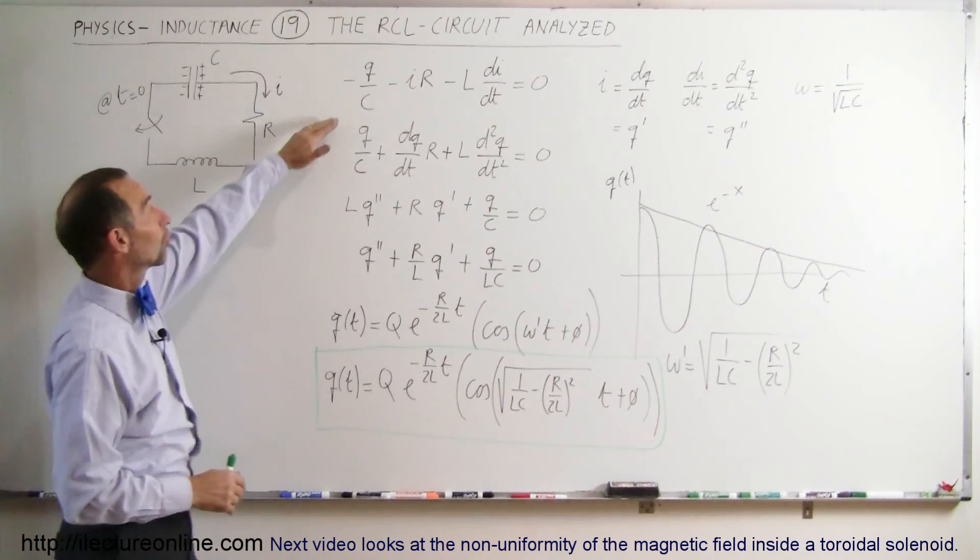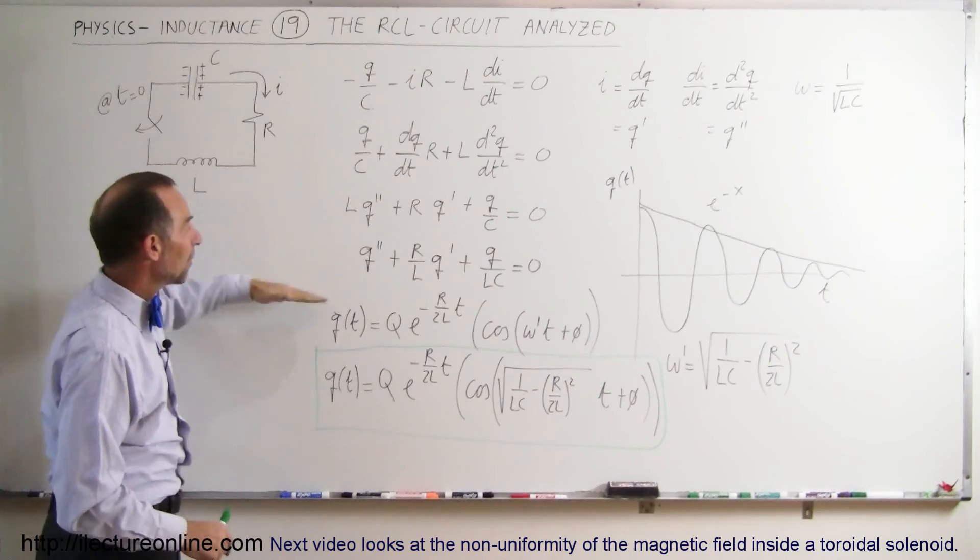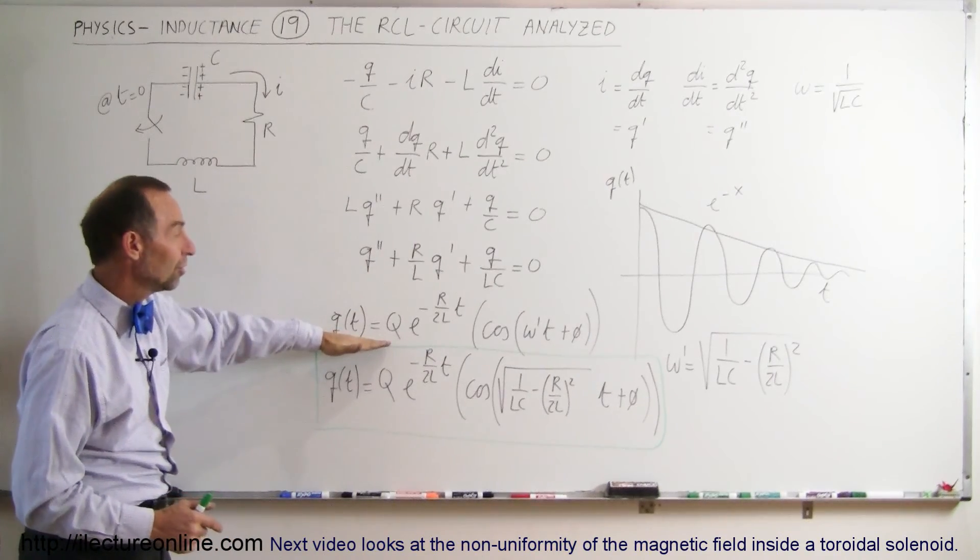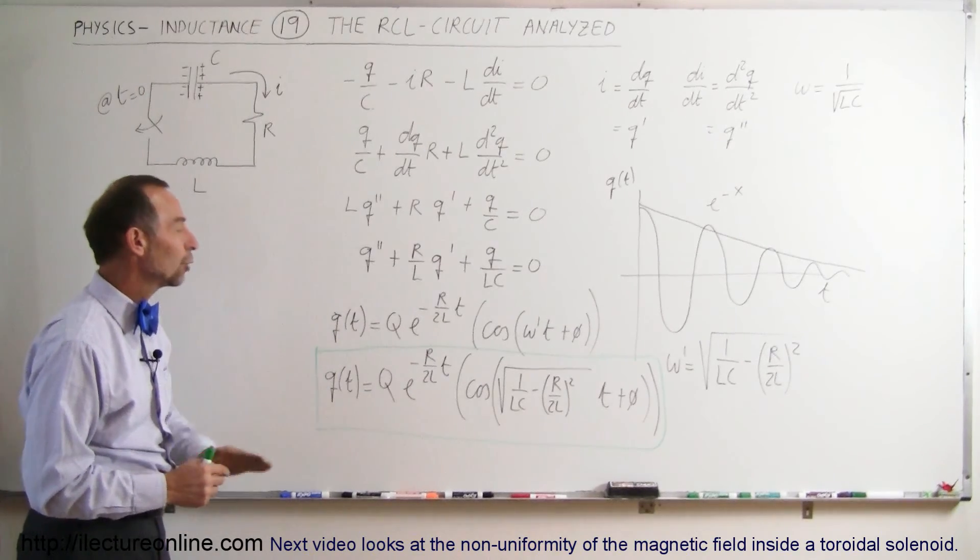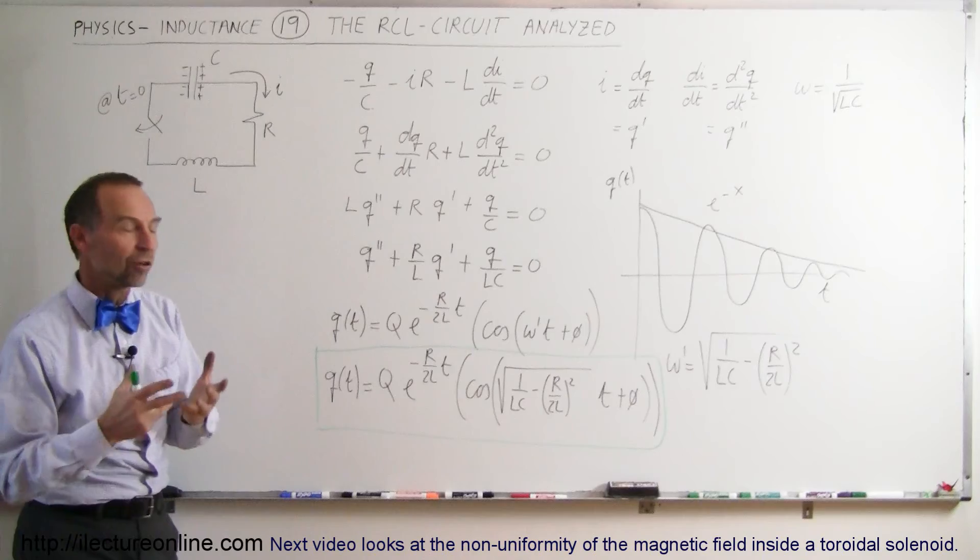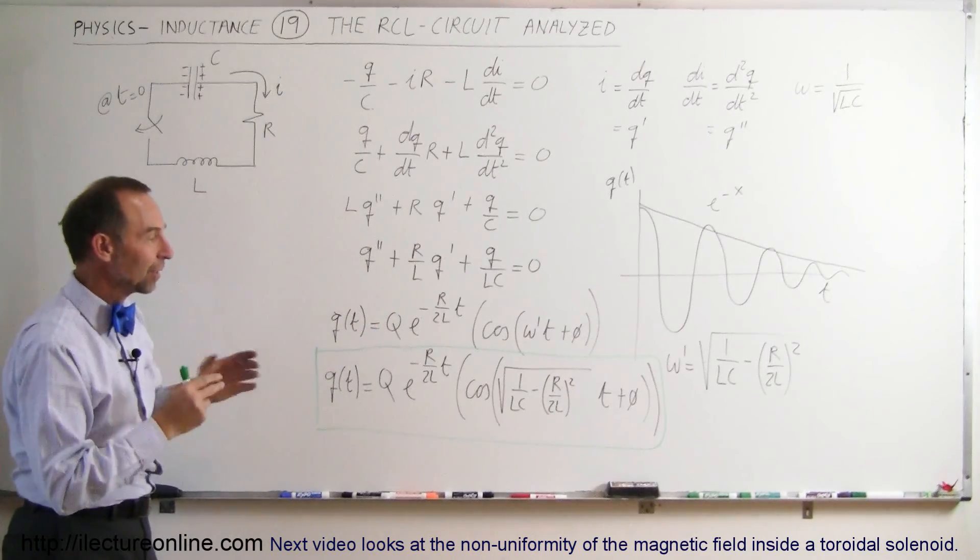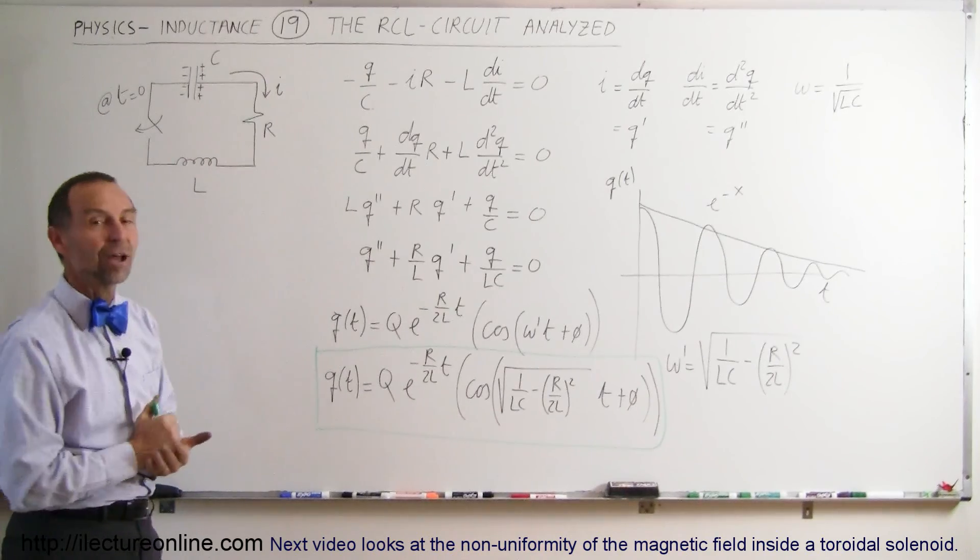And it all starts with using Kirchhoff's rules, finding the voltage drops across each of the three devices, coming up with a second order differential equation, finding the solution to that equation, which is for another video. And then here you get the final equation describing the charge on the capacitor as a function of time, which diminishes over time because the resistor takes the energy out of the system. And that's how we do that.